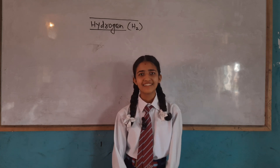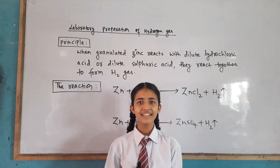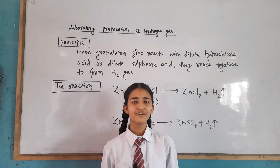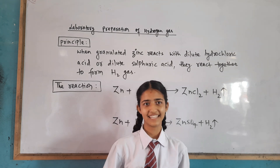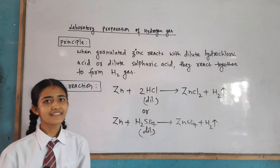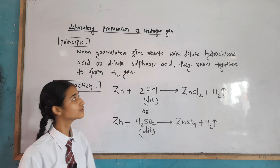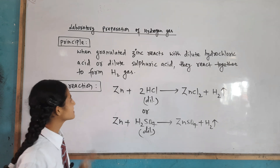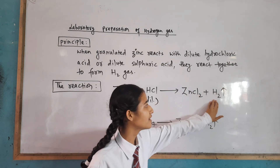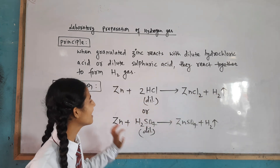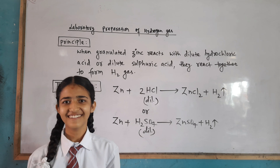Hydrogen is able to catch fire and burn easily. For the laboratory preparation of hydrogen gas, we need two things: zinc and dilute hydrochloric acid, or we can also use dilute sulfuric acid. When granulated pieces of zinc react with dilute hydrochloric acid or dilute sulfuric acid, they react together to form hydrogen gas. The reactions are: zinc plus hydrochloric acid forms zinc chloride plus hydrogen gas, or zinc plus dilute sulfuric acid forms zinc sulfate plus hydrogen gas.